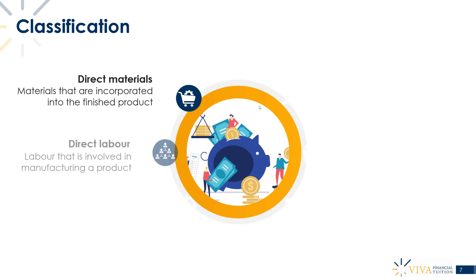The next classification is direct labor — the labor used to produce the output. In the smartphone factory example, this would be all the employees and workers on the factory floor involved in putting the product together: assembling the phone, putting all the parts together, gluing the back of the screen on. These are people directly involved in producing the product.